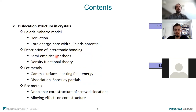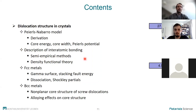We have seen several methods. Importantly, we have density functional theory, which is a very precise, parameter-free theory. We also have many other methods grouped under the term semi-empirical methods, which can provide dislocation structure and Peierls stresses at a lower computational cost, allowing you to run bigger and more complex calculations.